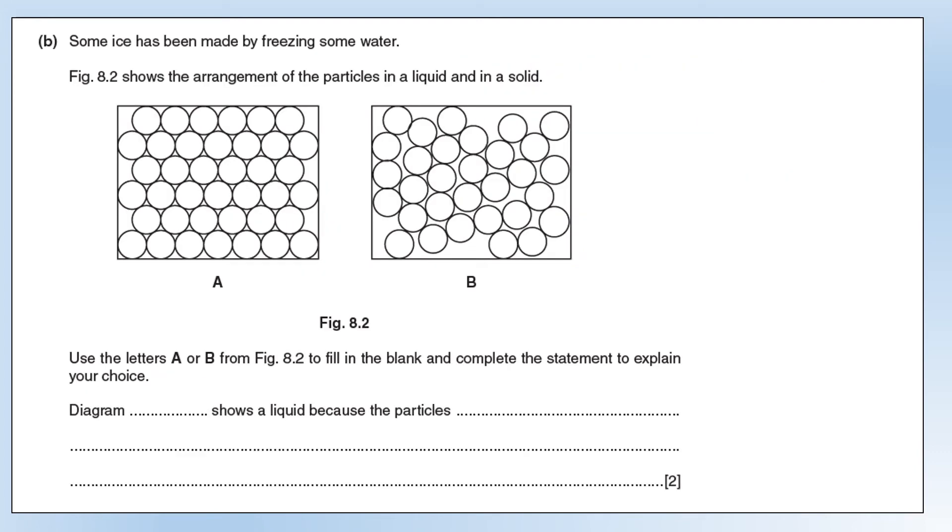Some ice has been made by freezing some water. Use the letters A or B to fill in the blank and complete the statement. Which of these two show a liquid? First of all, B is the diagram that shows a liquid. The reason we know that is because we can see the particles are arranged in a more random pattern. In A, they're very regular. B, they're in a more random, which is what we'd expect for a liquid. And the separation is slightly bigger than in B than it is in A, which is again a characteristic we'd expect for a liquid. So A would be a solid and B would be a liquid.